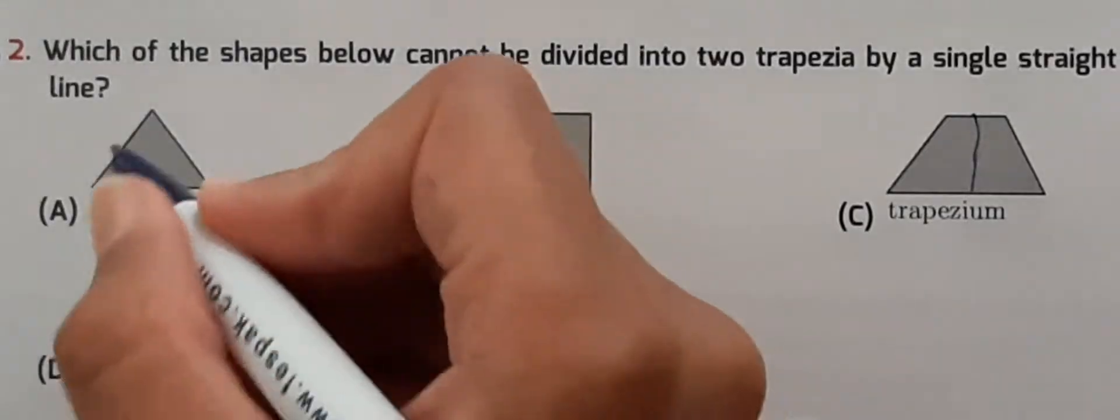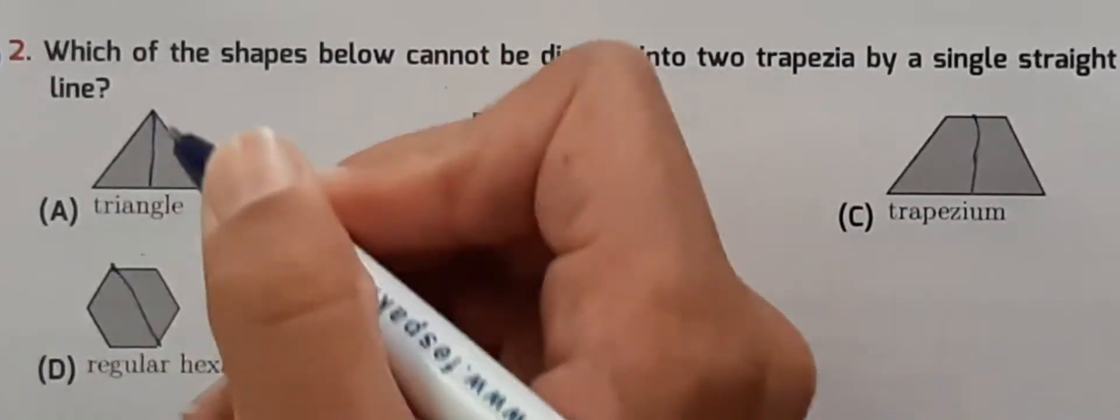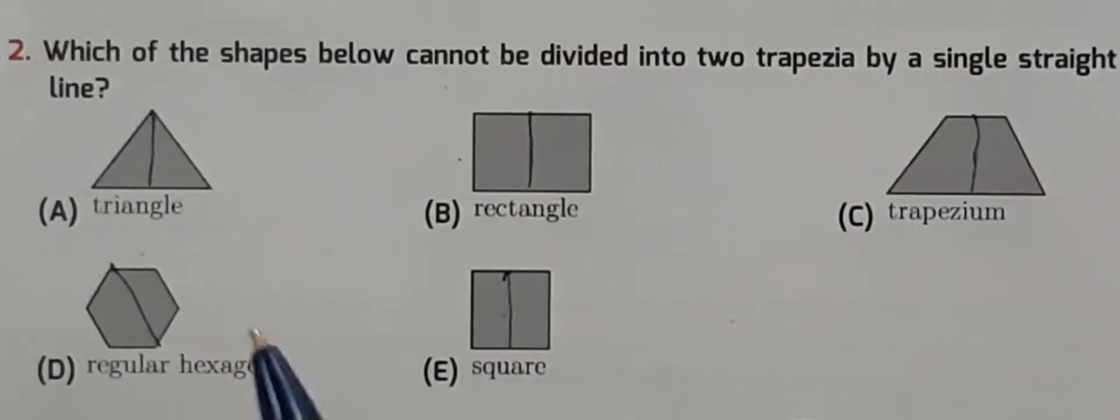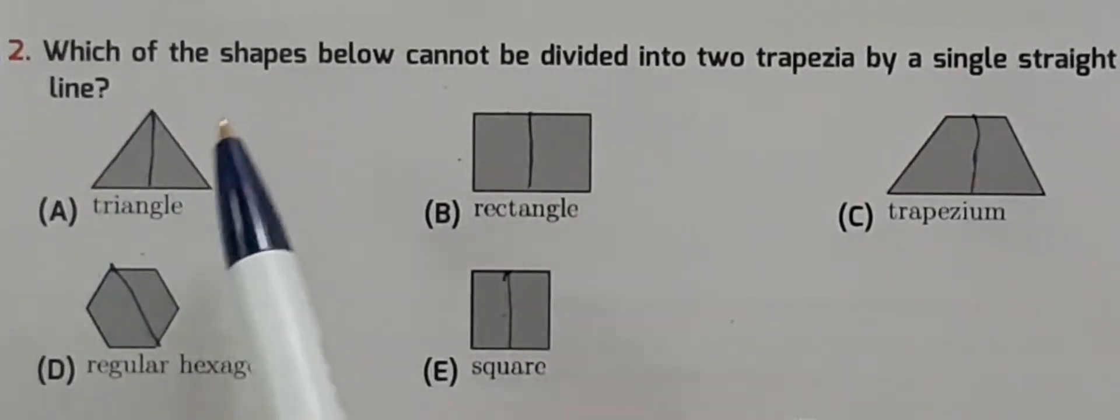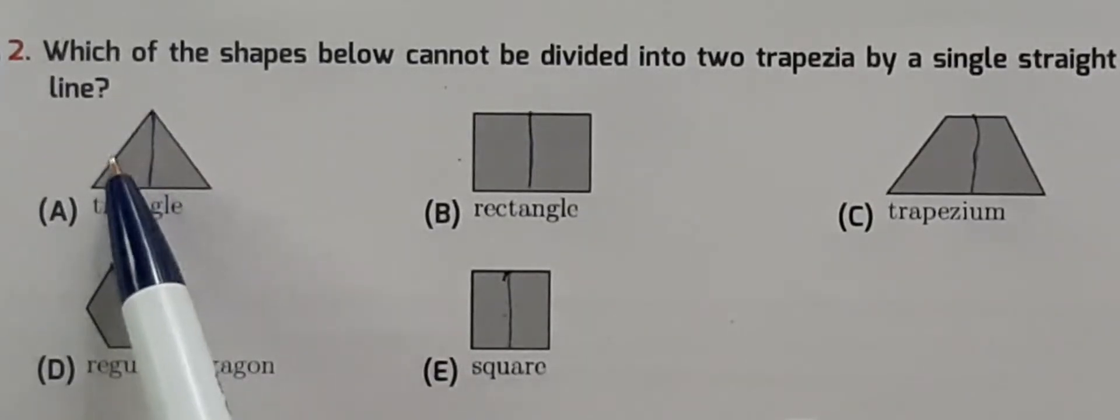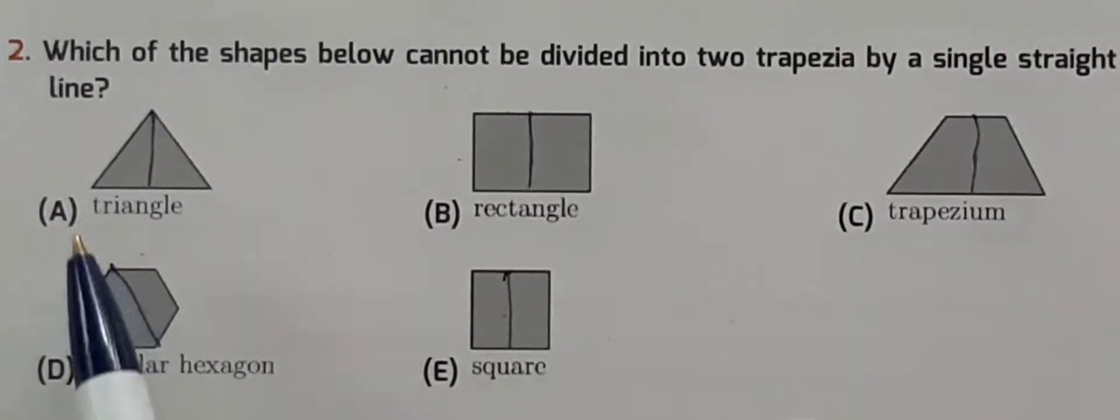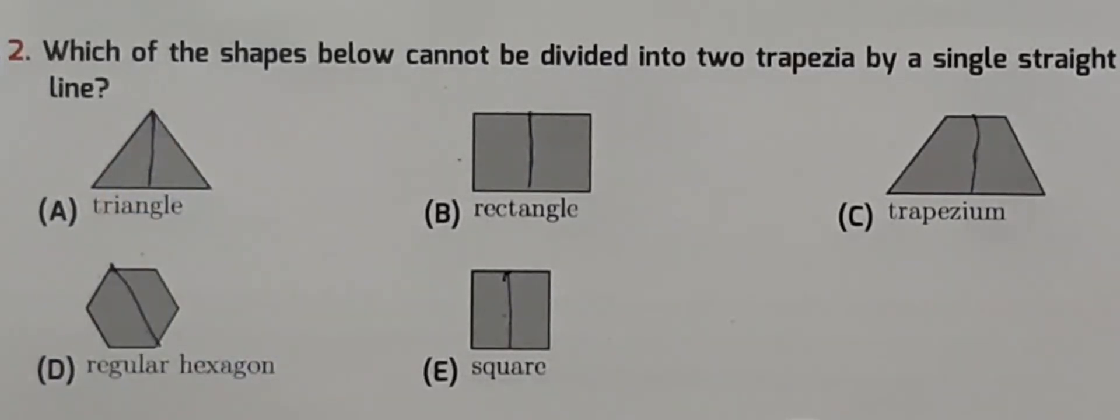Last is the triangle. If we draw a line through the triangle, it divides into two more triangles. Each has three sides, but a trapezium has four sides with two parallel to each other.